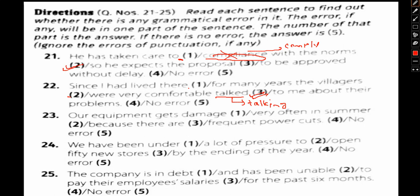Our equipment gets damaged (1), very often in summers (2), because there are (3) frequent power cuts (4), and no errors. If we take a look at question number 23, our equipment gets damaged is wrong.